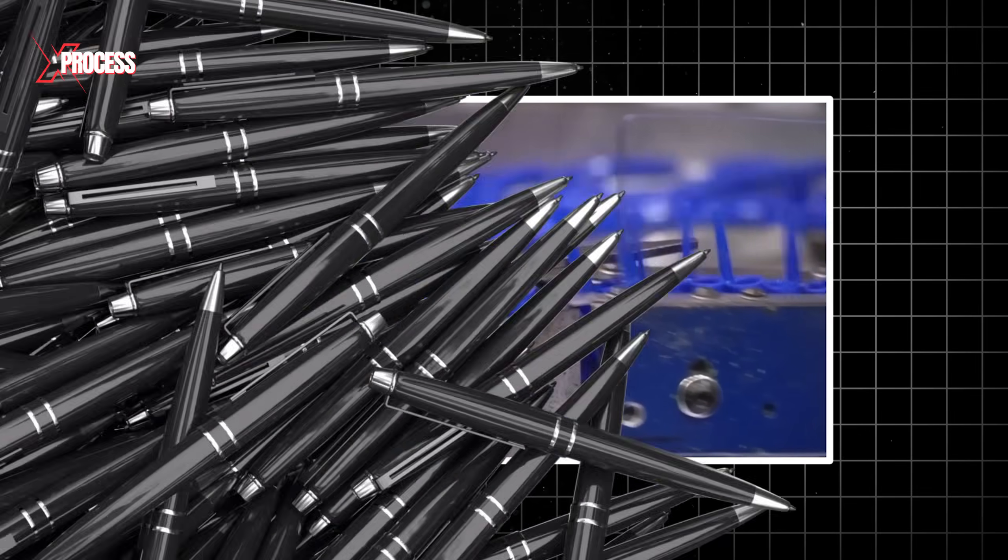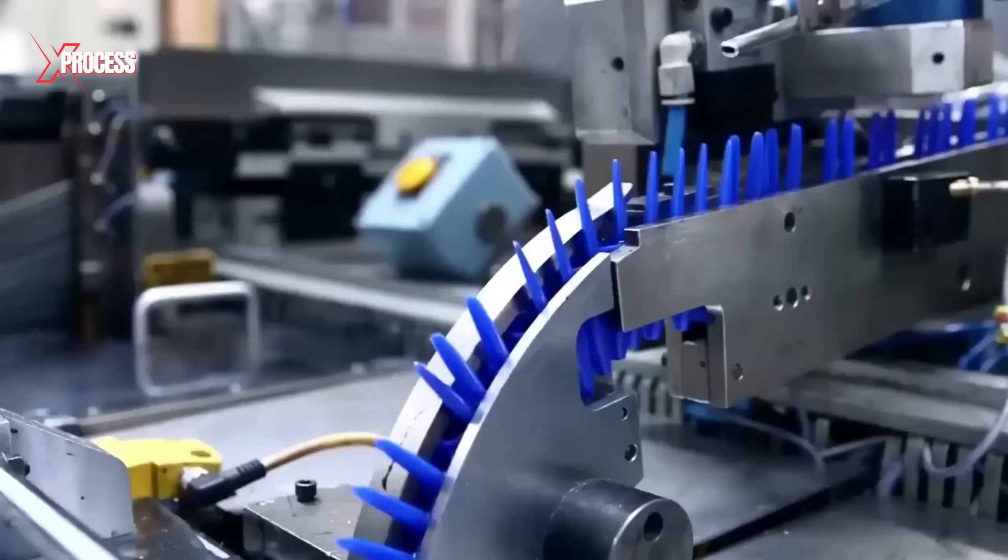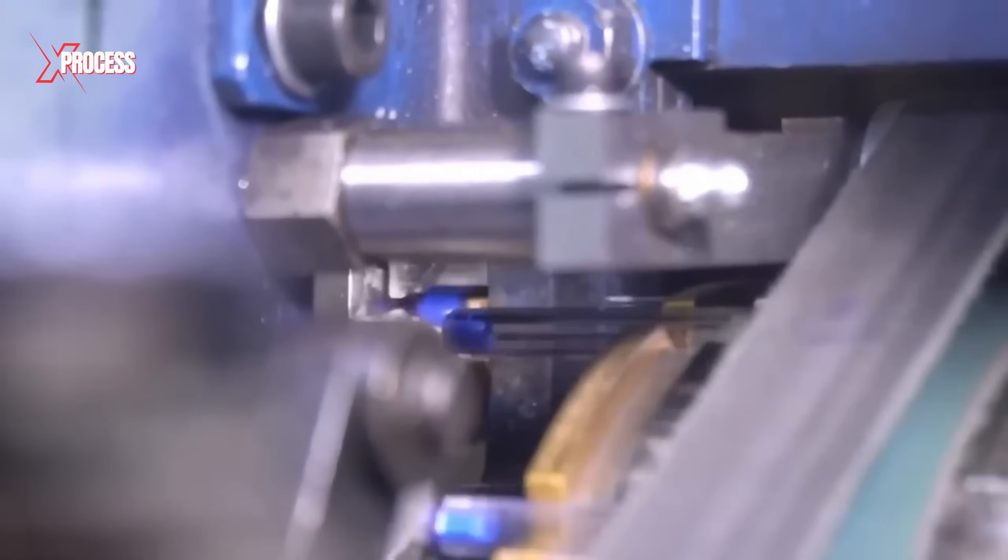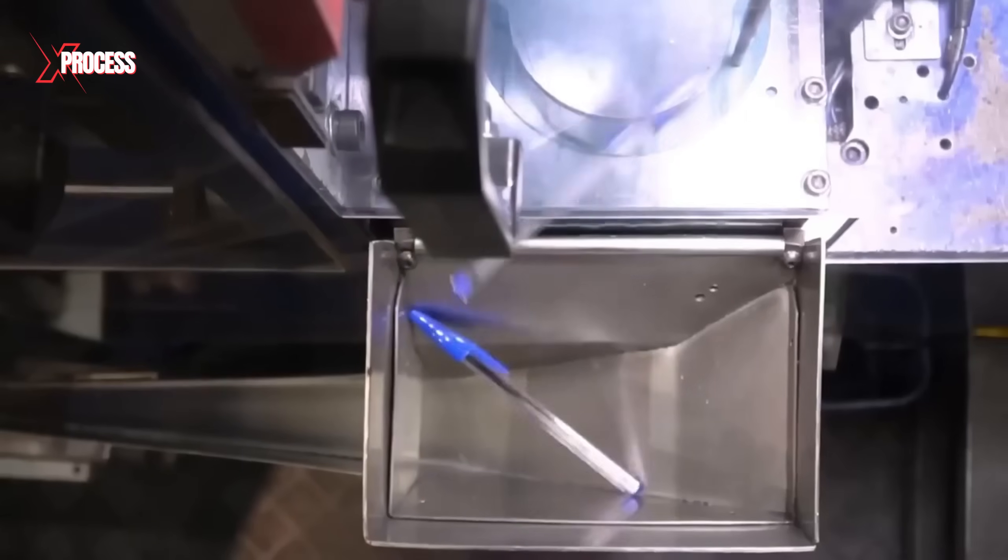Once this process is completed, all assembled components of the tube and the tip are inserted into the pen body. Finally, a plastic cap, matching the color of the ink, is placed on the end to complete the assembly.